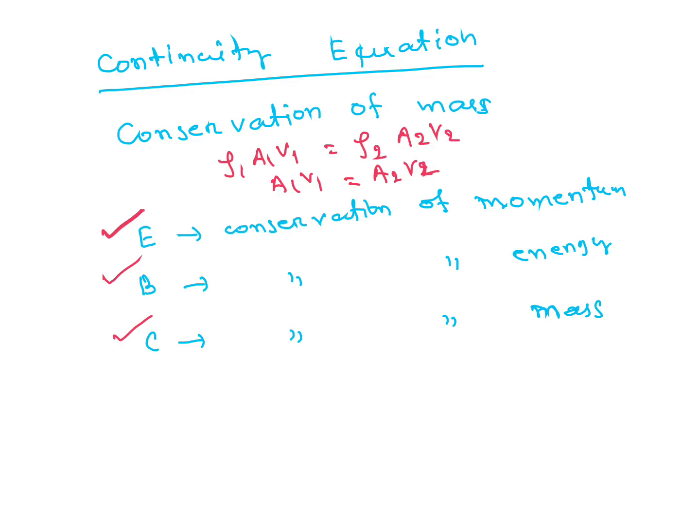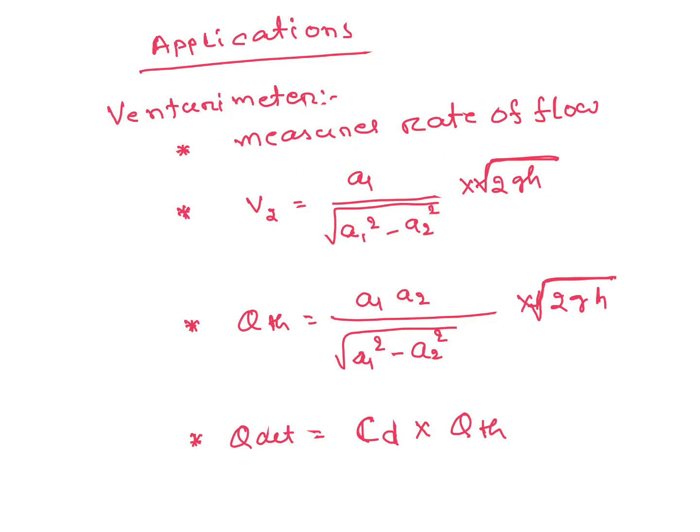In applications of Bernoulli's Equation, Venturimeter is important. Venturimeter and Pitot Tube both are important, orifice also important. Venturimeter measures rate of flow. Velocity at throat V₂ = A₁/√(A₁²-A₂²) × √(2gH). Theoretical discharge is A₁A₂/√(A₁²-A₂²) × √(2gH). Q actual = Cd × Q theoretical.